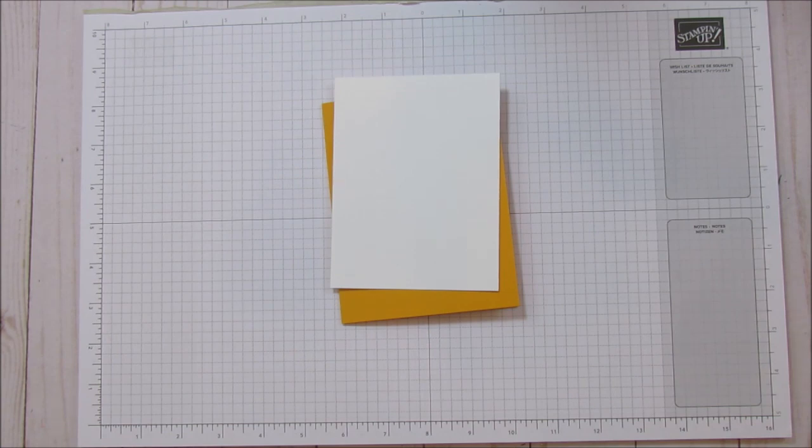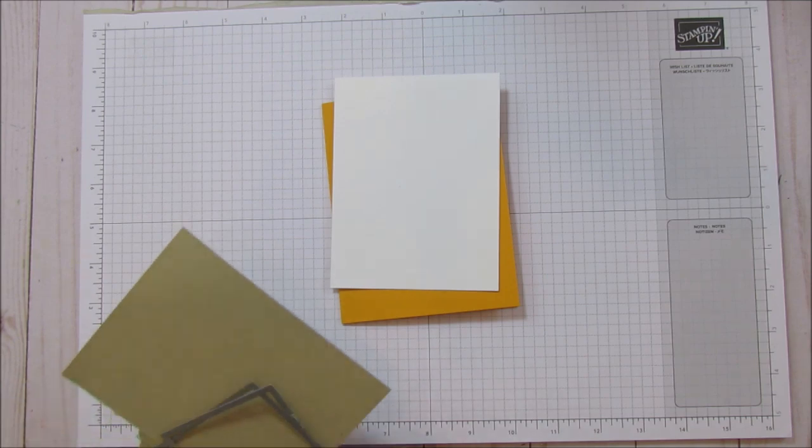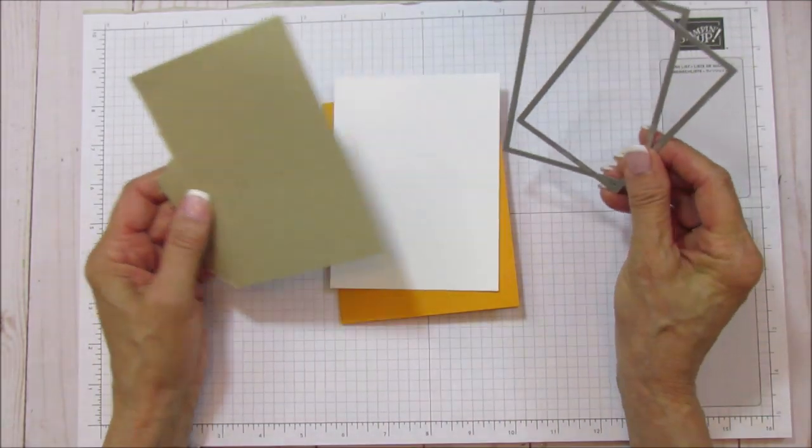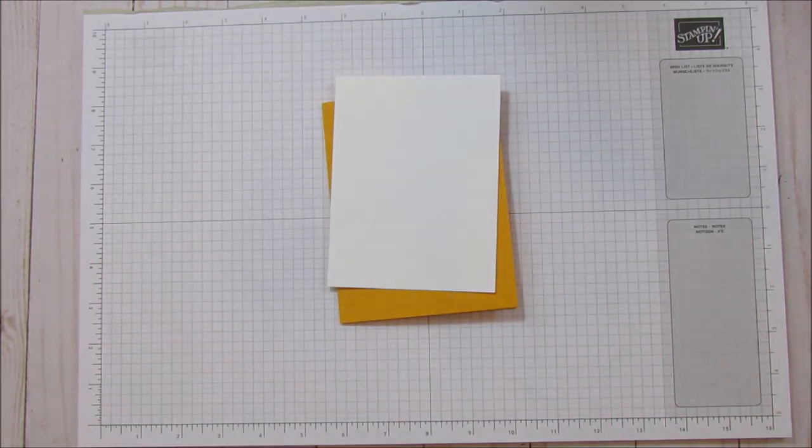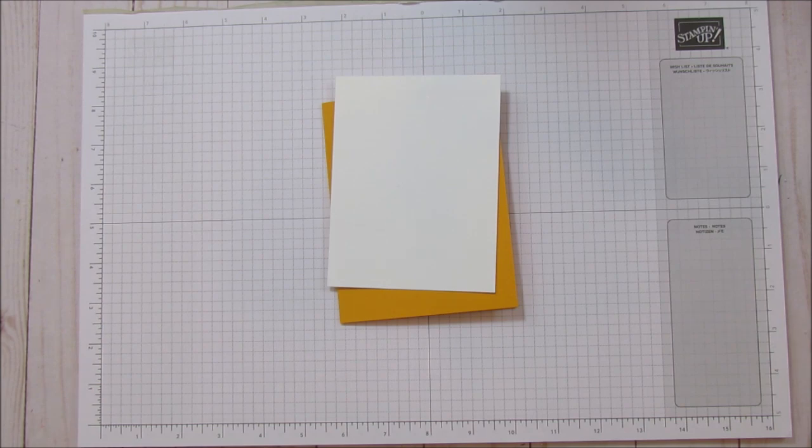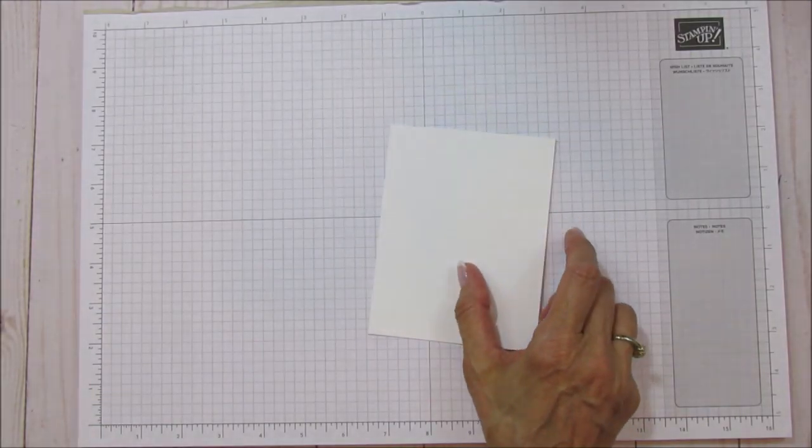Then you are going to need a piece of crumb cake because we are using our stitched rectangles and you need this for your frame. And I think that's it except for some Whisper White to stamp your daisies on and your leaves. Alright, let's do the background first.